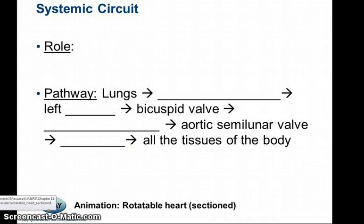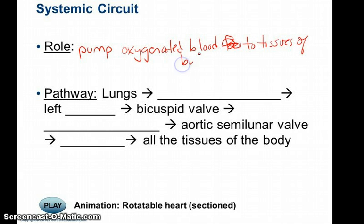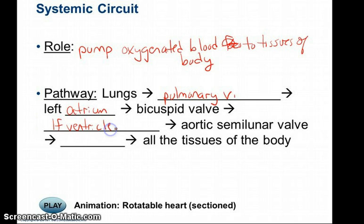The purpose of the systemic circuit is to pump oxygenated blood from the left side of the heart to the body tissues. The pathway is: lungs → pulmonary veins → left atrium → bicuspid valve → left ventricle → aortic semilunar valve → aorta → all tissues of the body except the lungs.